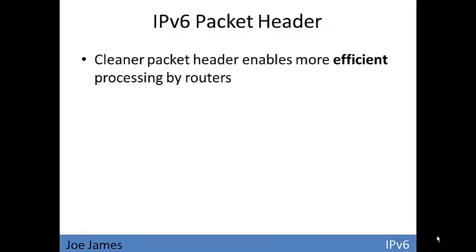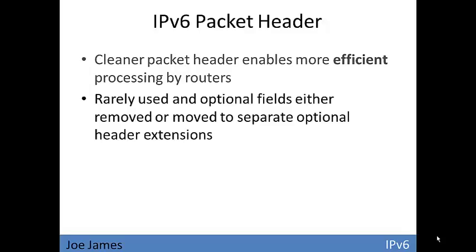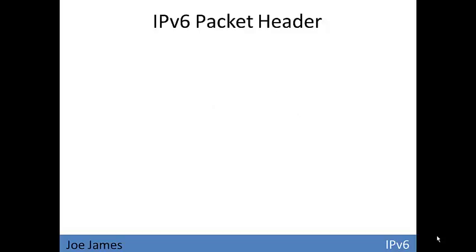Now let's look at the packet header. These are some of the technical changes to IP version 6 to make it more efficient. The router's job is basically to forward a packet to the next router closer to the destination — it looks at the destination IP address and determines where to forward the packet. They wanted to make packet headers more streamlined and efficient for routers to process, so they stripped out rarely used or optional fields from the header or moved them into different areas.